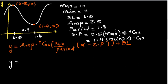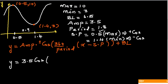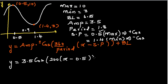Starting at x = 0.5, which is the maximum, we use a positive cosine graph. The amplitude is 3.5, times cos, times 360 divided by 1.8. That equals 200. So the equation is: y = 3.5 cos(200(x − 0.5)) + 6.5.